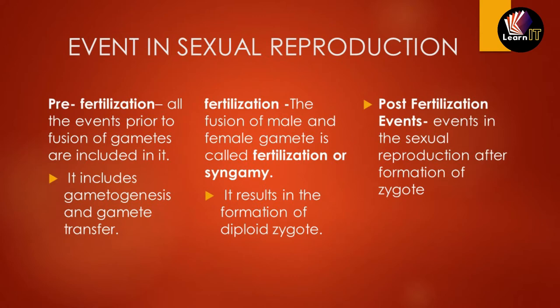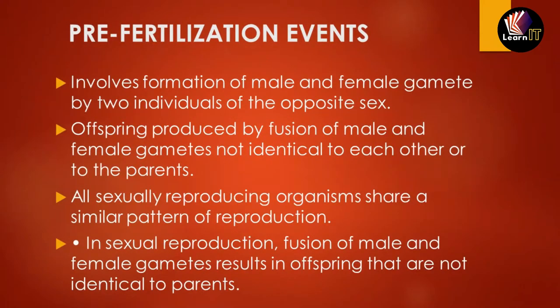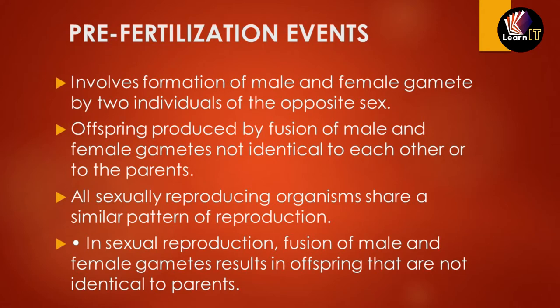Pre-fertilization events basically involve the formation of male and female gametes by two individuals of opposite sex. All offspring are produced from these male and female gametes, and importantly, male and female gametes are distinct — they are not identical. All reproducing organisms share a similar pattern of sexual reproduction. In sexual reproduction, only the fusion of male and female gametes results in offspring, and the offspring produced are not identical to the parents — they are not clones of each other.